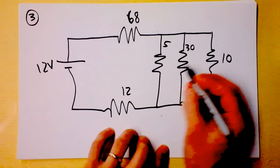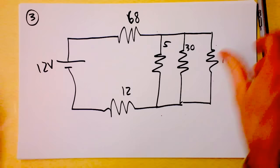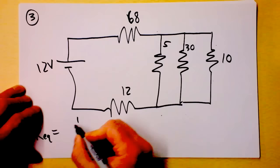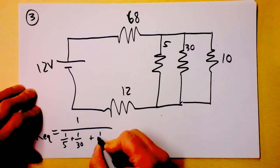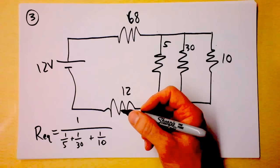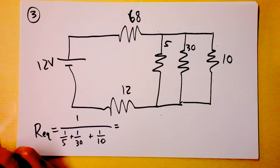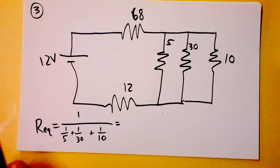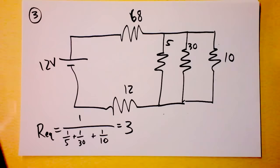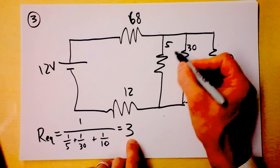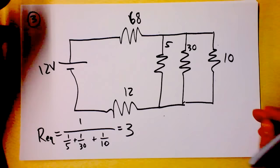Moving to slide 3: the system now has a 10 ohm equivalent resistance, 30 ohms, 5 ohms, 68 ohms, and 12 ohms. I now see very clearly that the 5, 30, and 10 ohm resistors are in parallel. So 1/Req = 1/5 + 1/30 + 1/10, and I get 3 ohms. The equivalent resistance of those three in parallel is less than any of the individual resistances — I think that's cool.